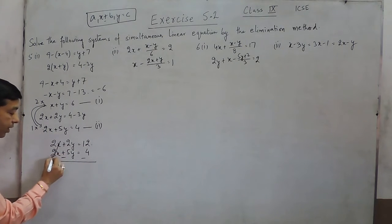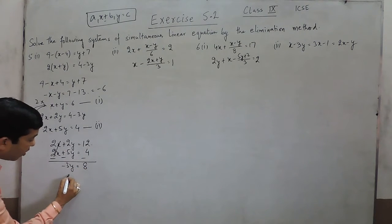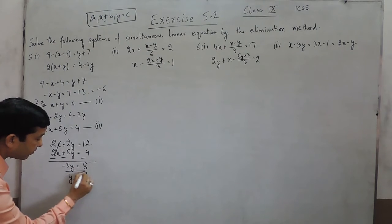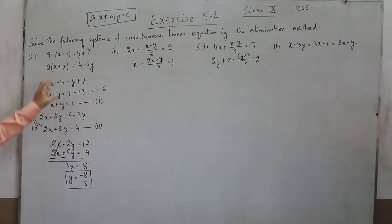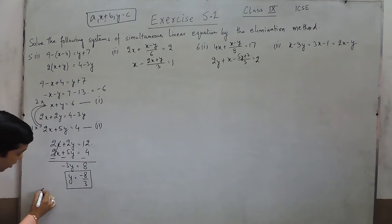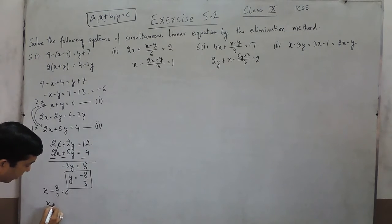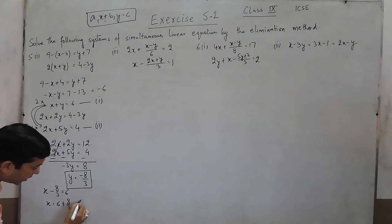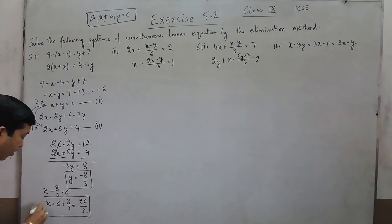Directly we subtract the two — the 2x can be cancelled out. Minus 3y becomes minus 8 upon 3. When I put the value of y, that is minus 8 upon 3, it is always better to put the value of y in the simplest form of equation. So it is x plus minus 8 upon 3 is equals to 6, so x becomes 6 plus 8 upon 3. Taking 3 as LCM, it is 18 plus 8, that is 26 upon 3. So this is the value of x.